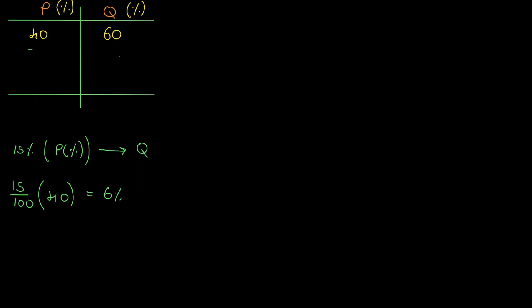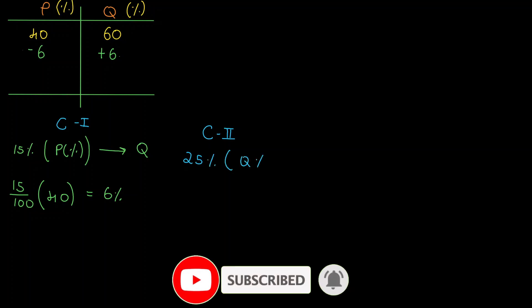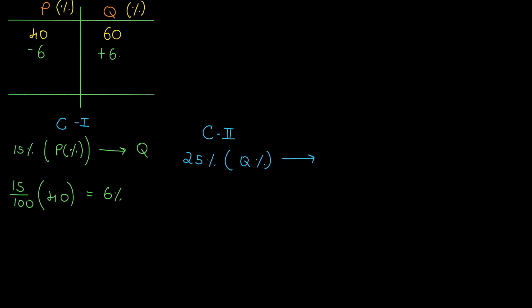So 6% of total people did not vote for P; instead they voted for Q. Now we will consider this as Case 1 and the next as Case 2. Remember, if 15% of voters are not voting P they should vote Q — you can't subtract 6 from P and forget to add 6 to Q. In Case 2, 25% of voters who promised to vote Q betrayed Q and voted for P. So 25% of 60 is 15. Subtracting and adding: 15% of voters did not vote for Q; instead they voted for P.